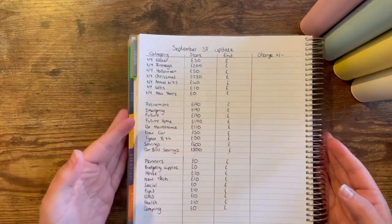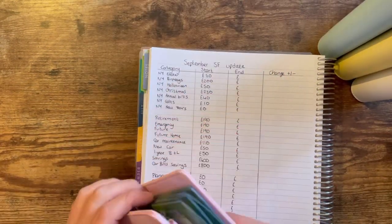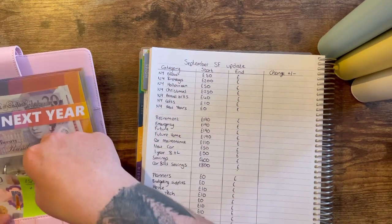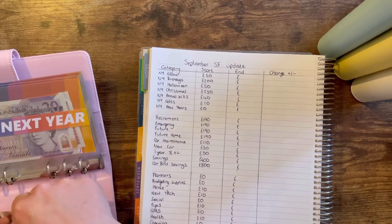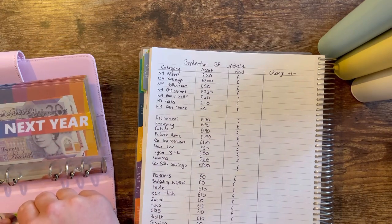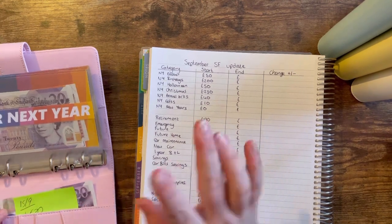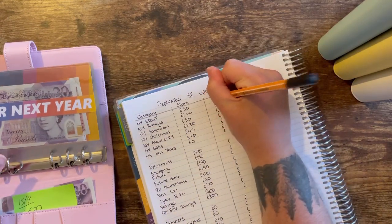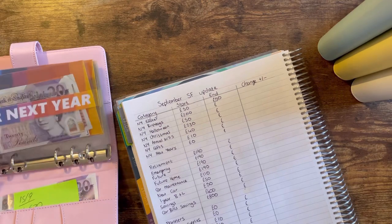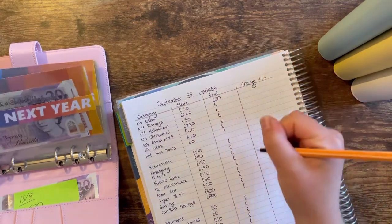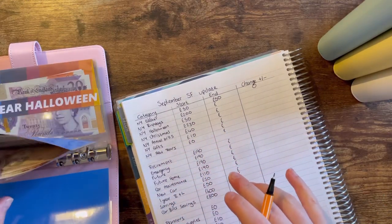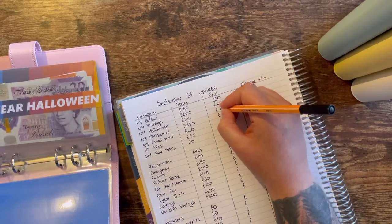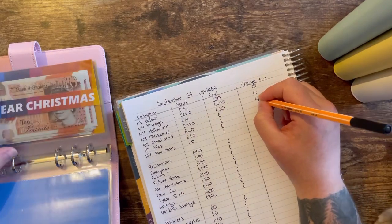So let's get started. I'm going to start with my next year funds. Easter next year was already fully funded, so there is no change. Next year birthdays is still at 200, it was already fully funded. Next year Halloween was already fully funded.